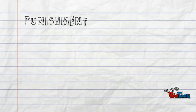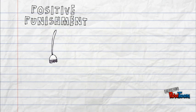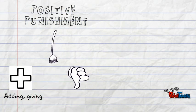On the other hand, punishment is used to decrease a behavior. When your mom makes you do chores when you don't do your homework, this is called positive punishment. Because the punishment is added or given to you, it is considered positive.